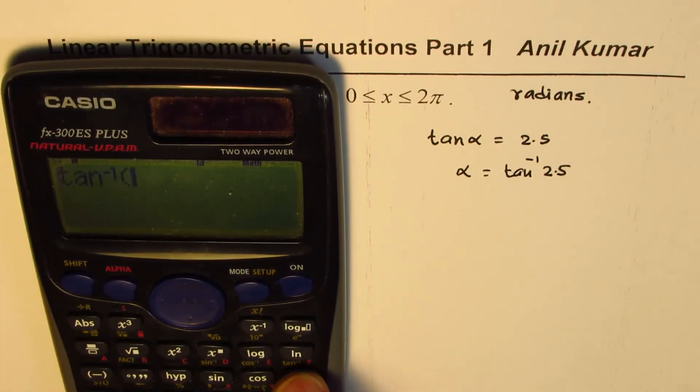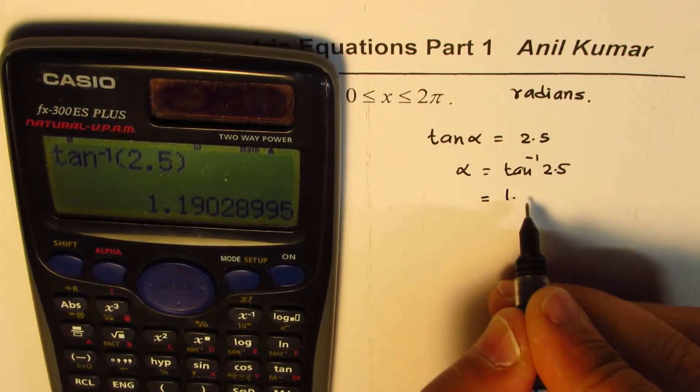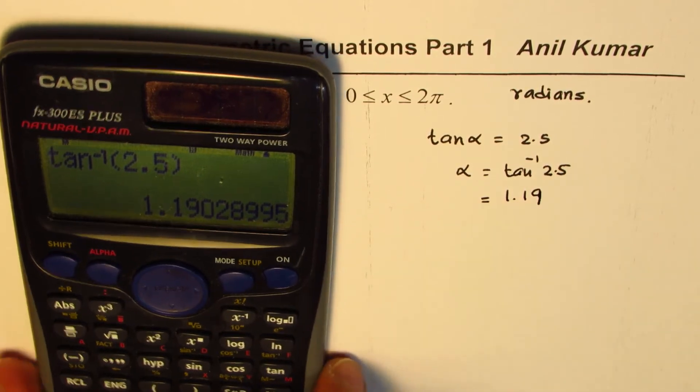Shift, tan inverse, 2.5 equals to, so we get a value which is 1.19. So that is the value of alpha.